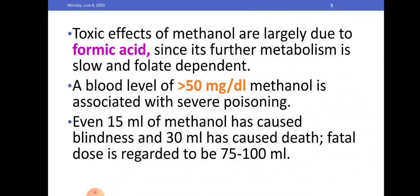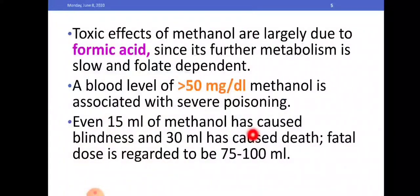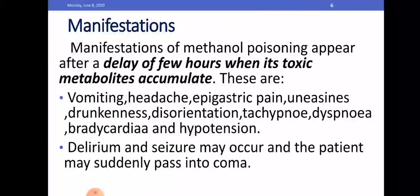The toxic effects of methanol are largely due to formic acid, since its further metabolism is slow and folate-dependent. A blood level of greater than 50 mg per deciliter of methanol is associated with severe poisoning. Even 15 ml of methanol has caused blindness, and 30 ml has caused death. The fatal dose is regarded as 75 to 100 ml.